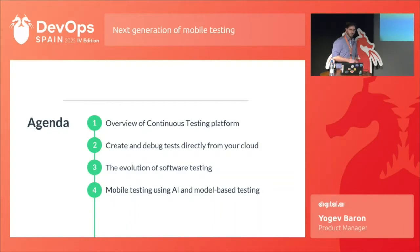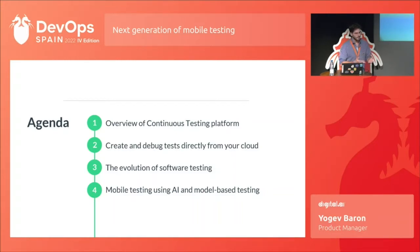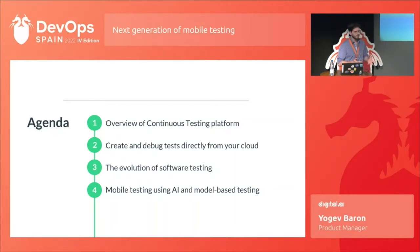Regarding the agenda for today, we're going to talk about the continuous testing platform. I'm going to show you how this platform looks like and show you a really effective tool where you can build tests directly from the cloud and run them on a real device. I will also touch on the evolution of software testing and demonstrate our autonomous testing tool that uses machine learning and AI on a real application.